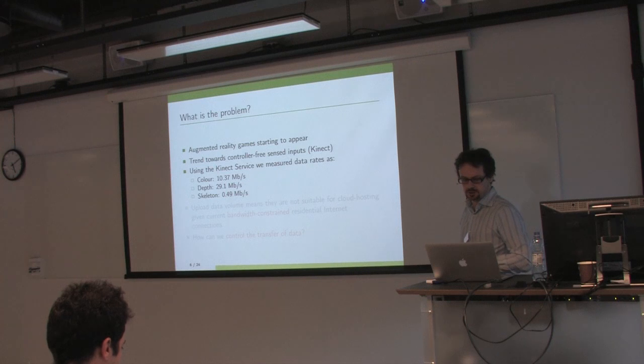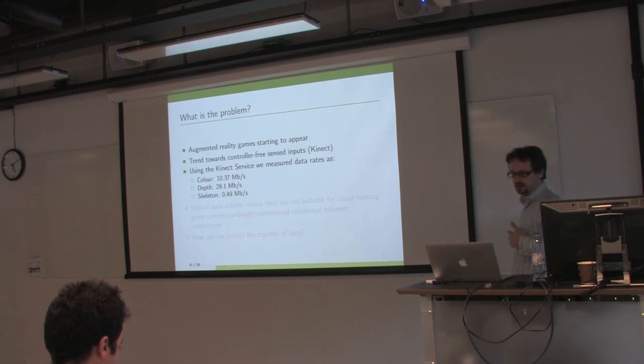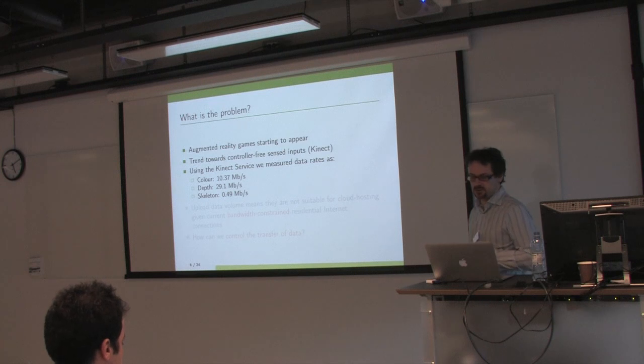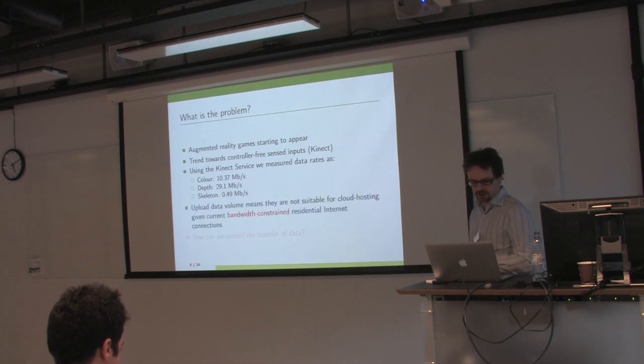Based on the measurements we did using the Kinect Service, to stream the color image is about 10 megabytes per second, the depth image nearly 30 megabytes per second, and the skeleton data half a megabyte per second. If you think of a standard residential broadband connection, obviously the upload speeds are much less. Streaming to a cloud seems pretty difficult with those kind of numbers.